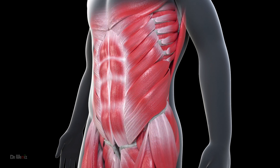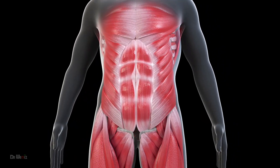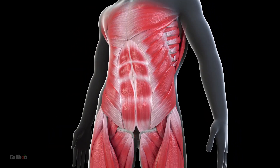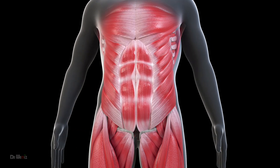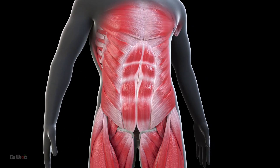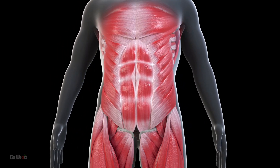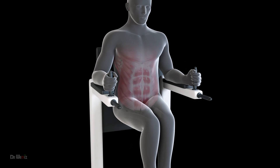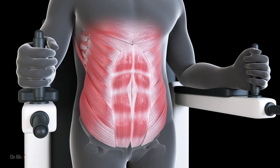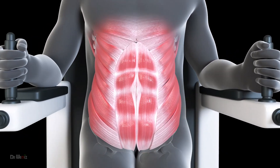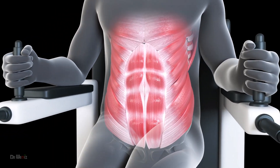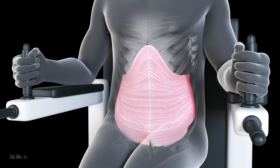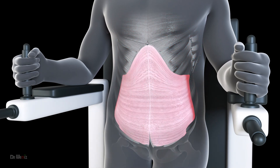Overall, the four muscles of the abdominal wall work together to provide stability and strength to the core. While each muscle has its own unique functions and movements, they all contribute to the creation of intra-abdominal pressure, which helps to protect the spine and internal organs during movement.